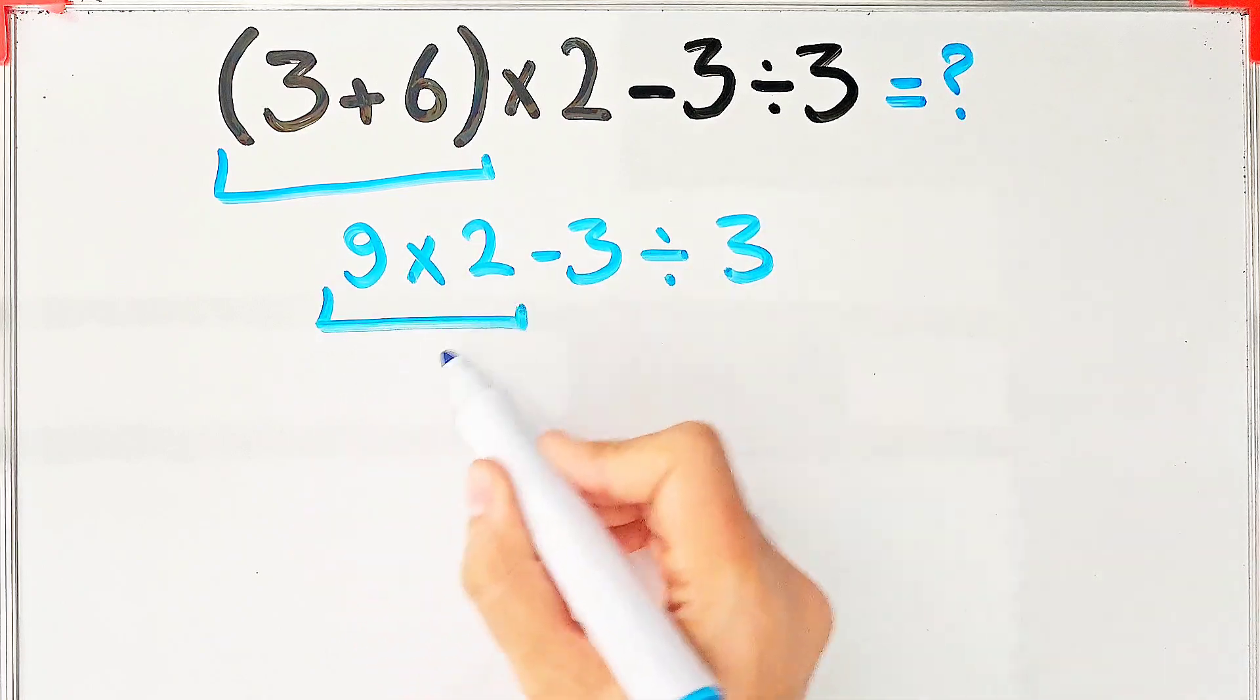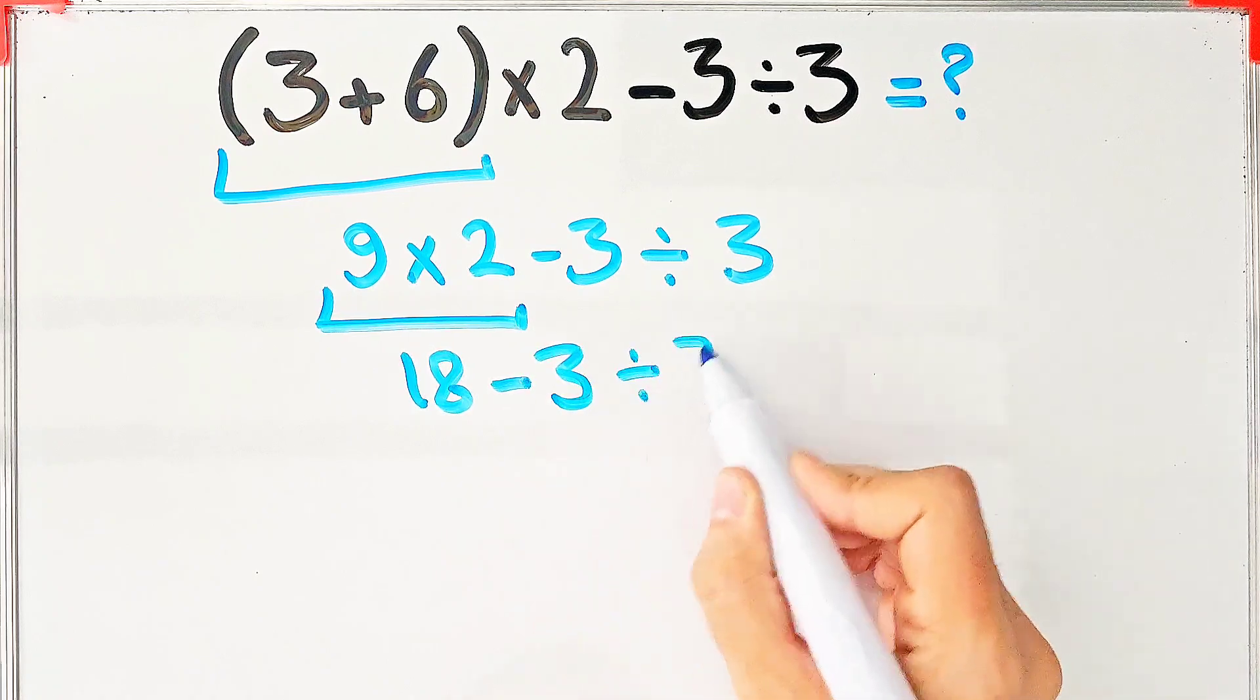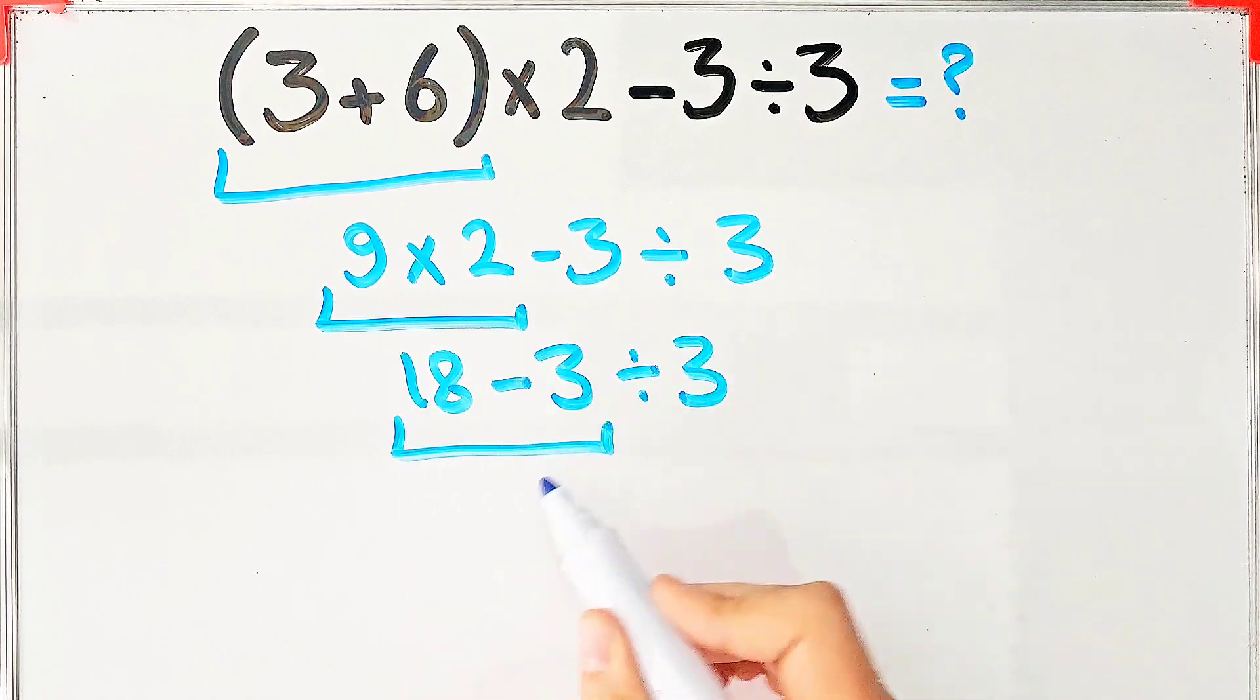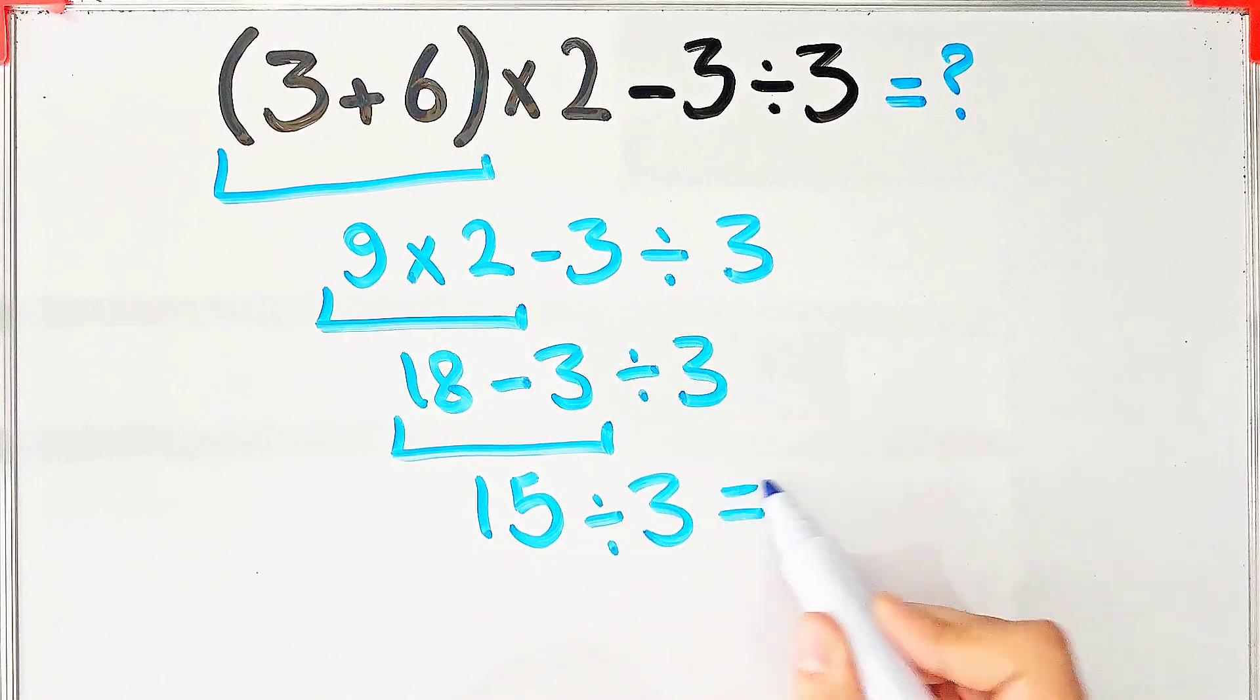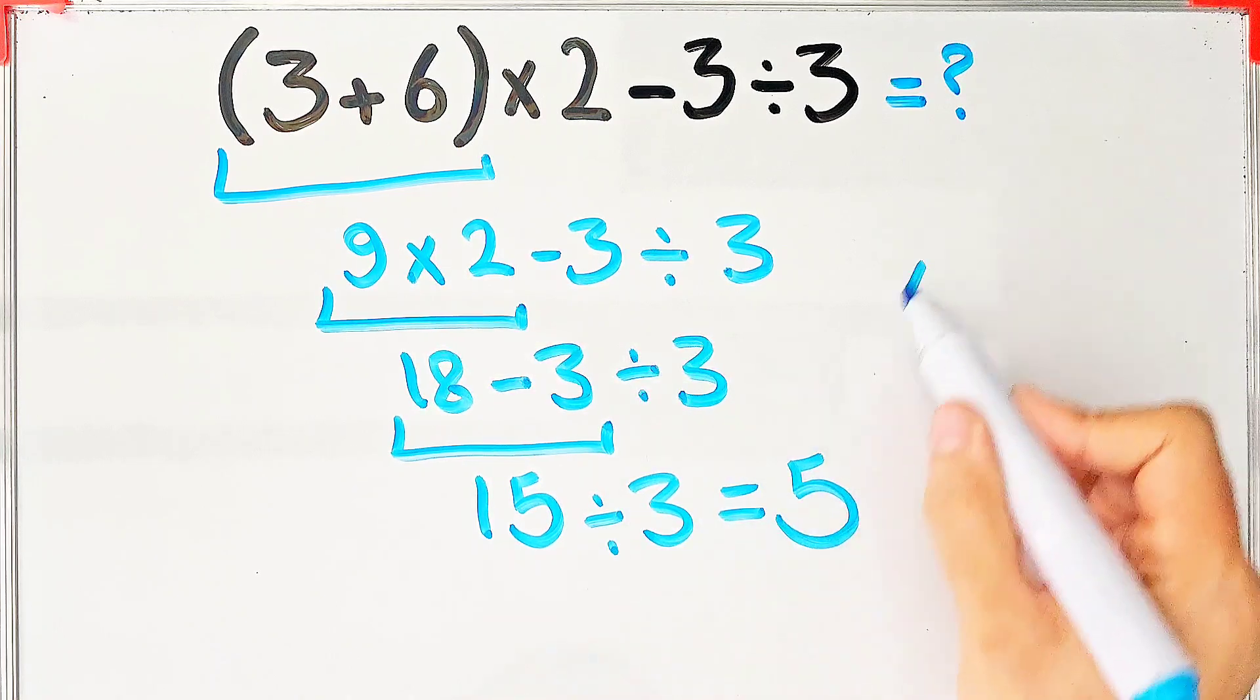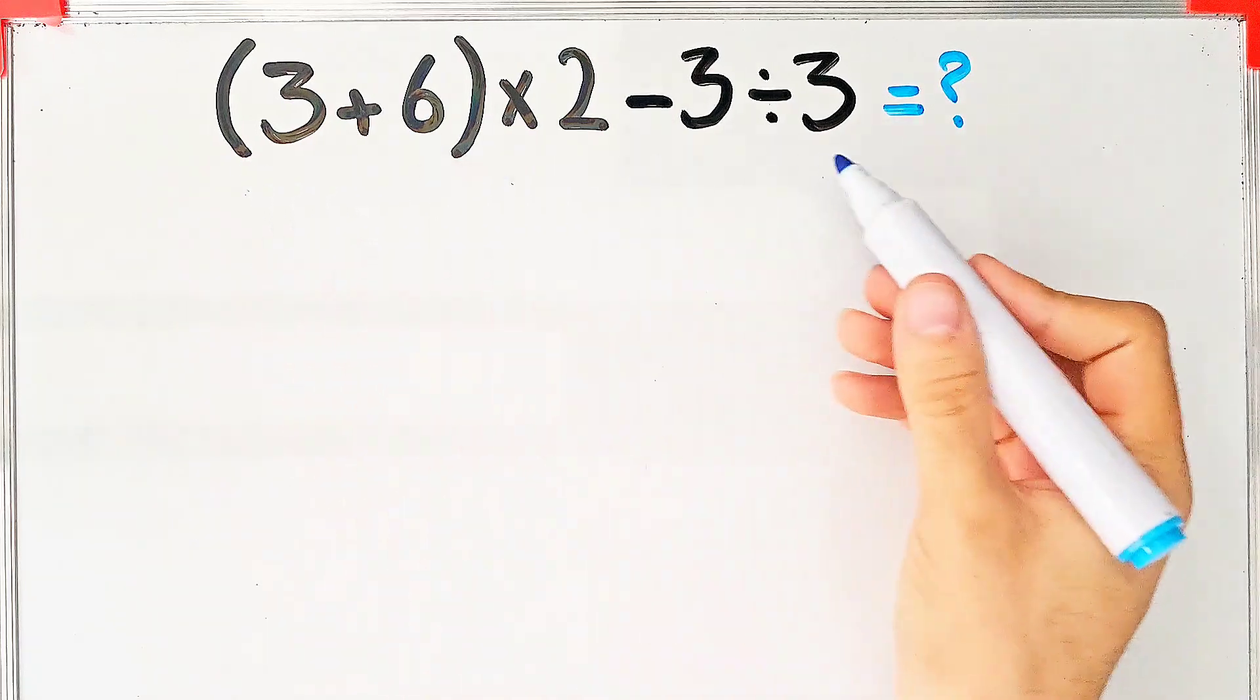9×2 equals 18, 18-3 then divided by 3. 18-3 equals 15, and 15 divided by 3 equals 5. But this answer is definitely wrong. Let's solve this question step by step together.